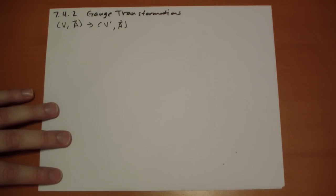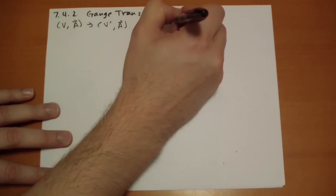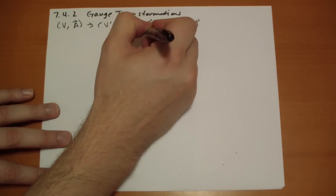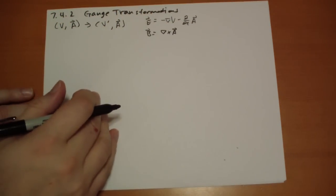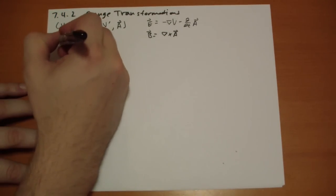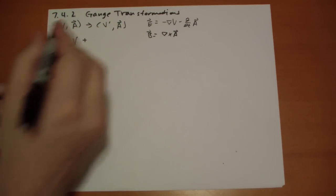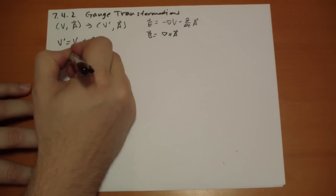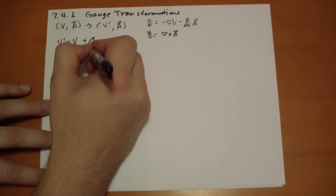So we can't violate the constraints that the E vector has to be negative the gradient of V minus the time derivative of the A vector, and the B vector has to be equal to the curl of the A vector. So for the V vector, V prime is just going to be V plus some scalar field beta. And A prime is going to be A vector plus some vector field alpha.